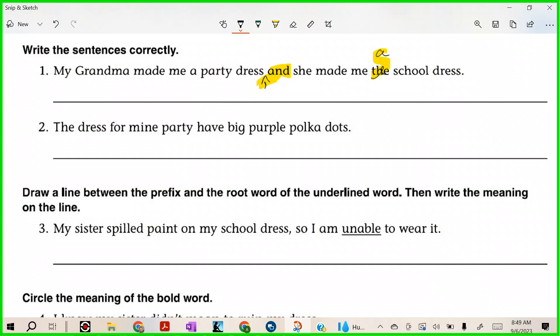Brin, what do you got? Should be 'my' party, right. So 'The dress for my party have big purple polka dots.' Aiden? 'Have' should be 'has,' right. Now let's read it. 'The dress for my party has big purple polka dots.' We have how many corrections on that one? Two for the first, two for the second.